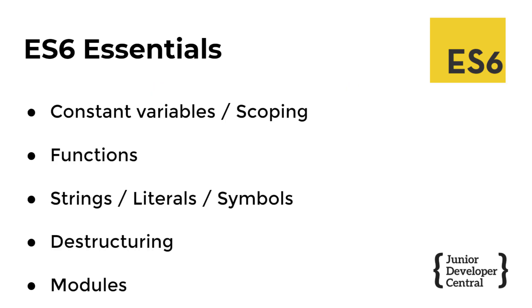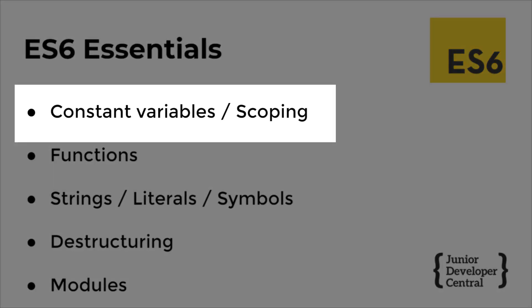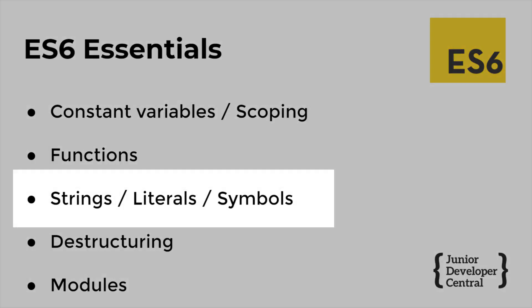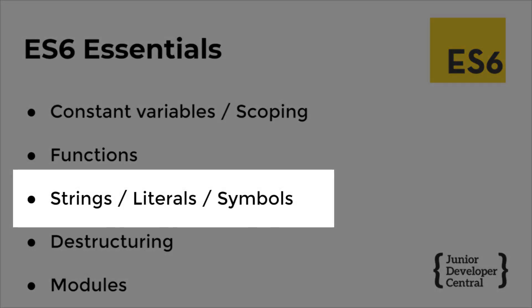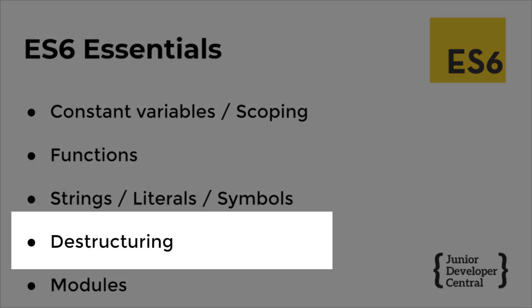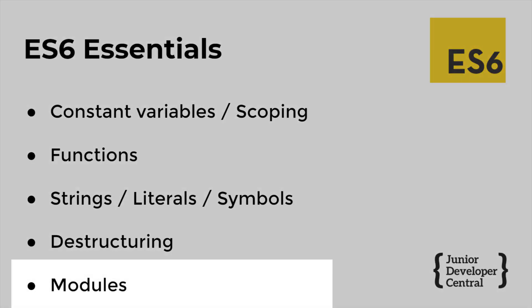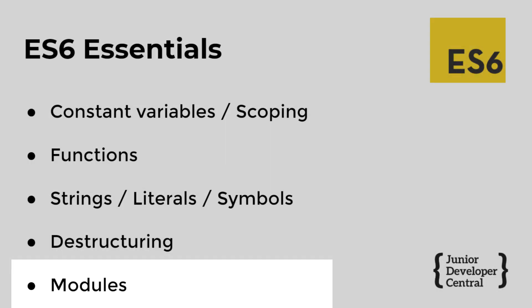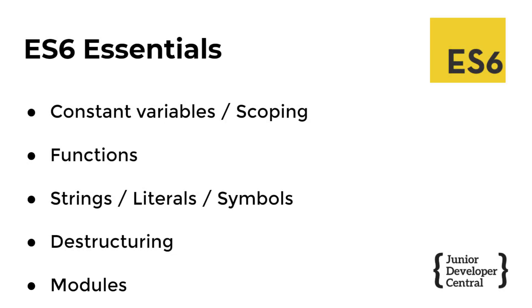To give you a brief summary of what we'll be covering: we're going to look at constant variables and scoping, changes made to functions, new data types such as template literals and symbols, destructuring arrays and objects, and also modules — which make it really easy to import and export code from different files.